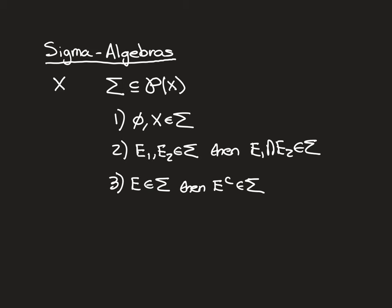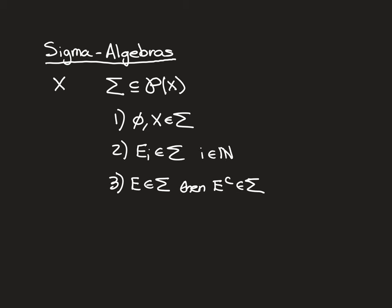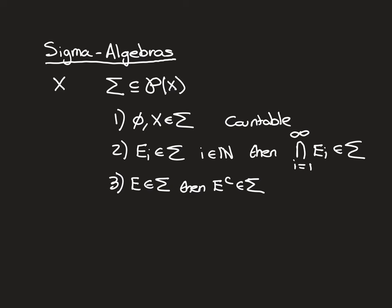Now, to be called a sigma algebra, it has to be upgraded. Property two is the one that's going to be upgraded — it now has to be closed under not just finite intersections, but countable intersections. So we'll have E_i elements of sigma for i a natural number, and then the intersection from i equals 1 to potentially infinity of E_i has to be an element of sigma. Countable, of course, could mean finite or countably infinite. We're not insisting on closure under uncountable intersections, just upgraded it to countable.